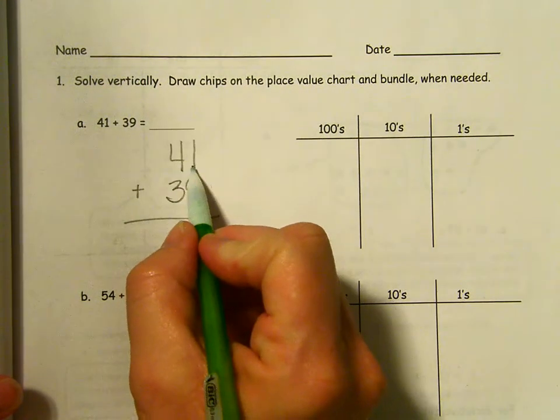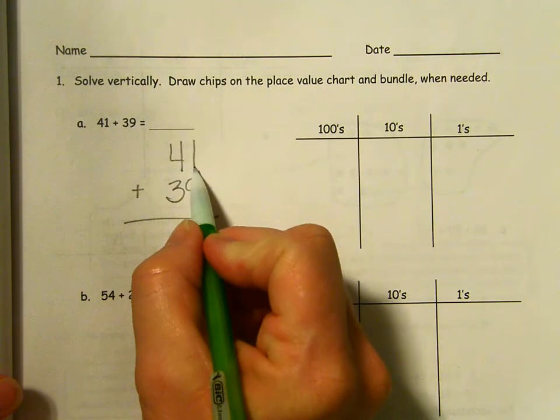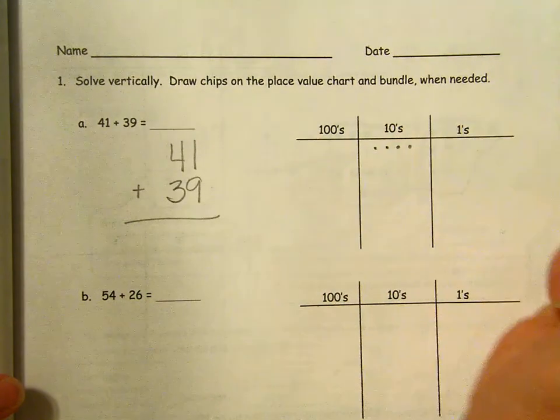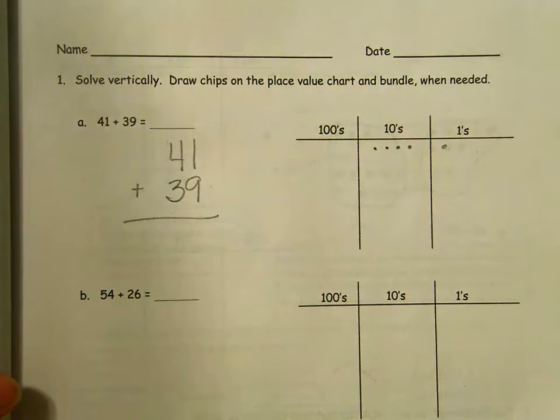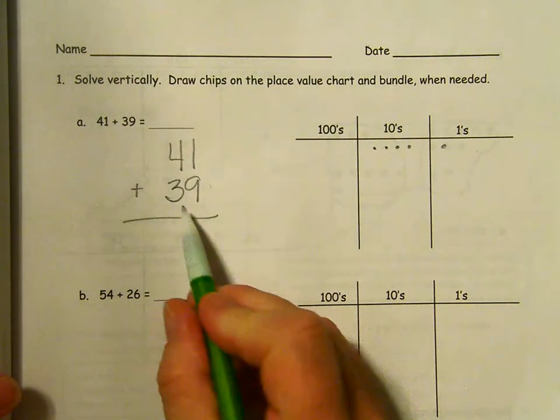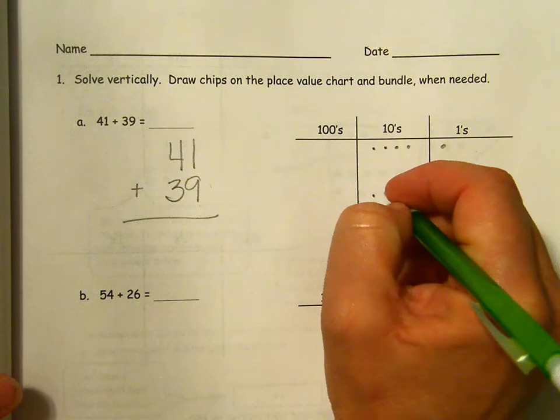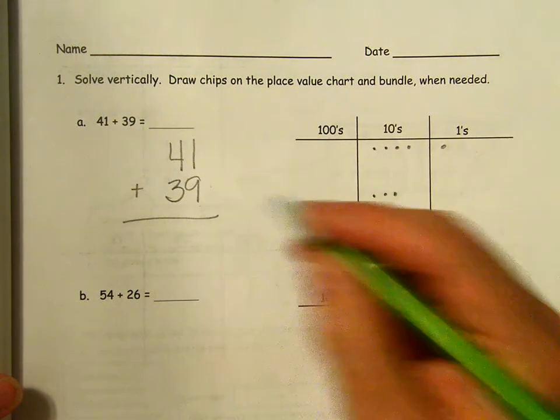So 41 has four tens, one one. So one, two, three, four, one one. 39 has three tens. One, two, three, and nine ones.